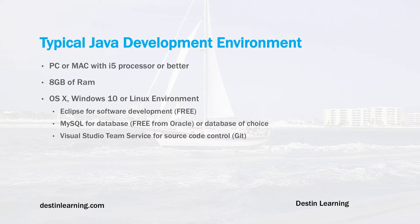For a typical Java development environment, you have the choice of using a PC or a Mac. Either should have at least an i5 processor or better, and eight gigabytes of RAM — though 16 would be better if you can afford it. You can download and install Eclipse for free, as well as the MySQL database from Oracle. You can also use Visual Studio Team Services for source control, even though it's a Microsoft product — it's also a free web-based tool.